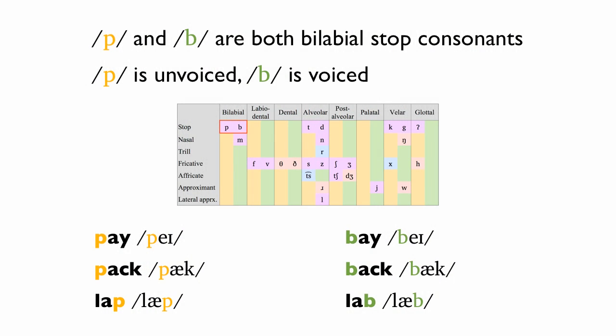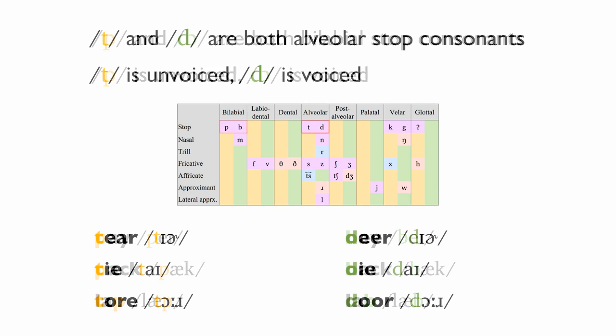P and B are both bilabial stop consonants. P is unvoiced. B is voiced. T and D are both alveolar stop consonants. T is unvoiced.